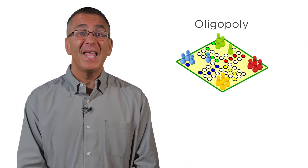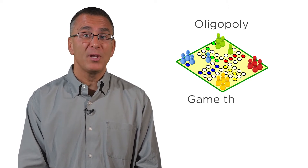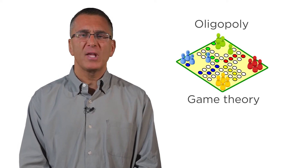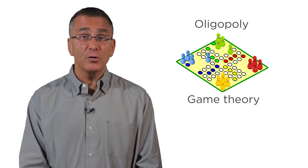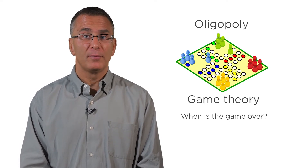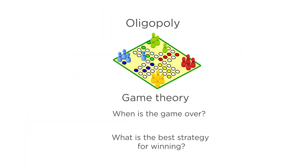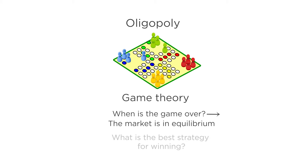We can think of oligopolistic firms as engaged in a kind of game. We'll analyze these types of situations using the tools of game theory. The game that firms are playing in oligopoly is determining the outcome in a market. The game is over when the market is in equilibrium — when all participants are satisfied with the outcome and have no incentive to change their quantities or prices. So what is the firm's best strategy for setting quantity and price? That depends on what it thinks other firms in the market are doing.